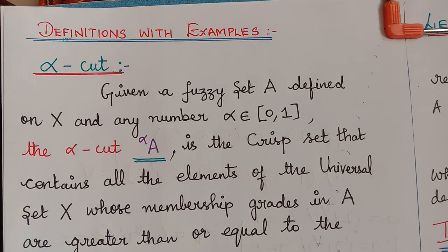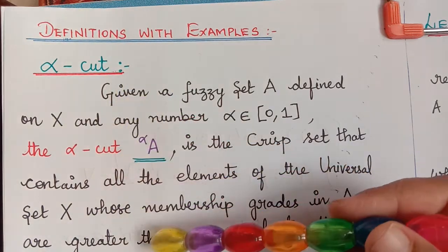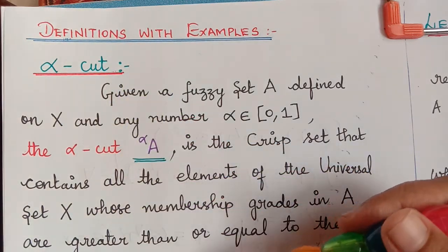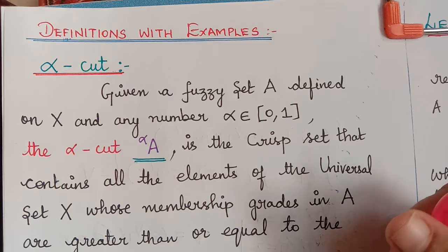Hello students, in this lecture we will be learning about a few definitions under the topic fuzzy set theory with examples. The definitions will be alpha cut, strong alpha cut, level set, and a few properties of alpha cut and strong alpha cut.